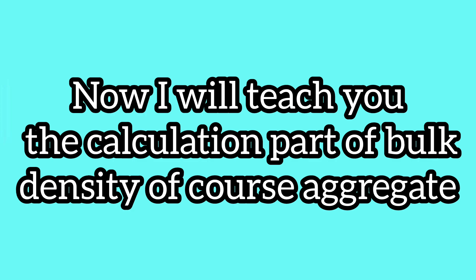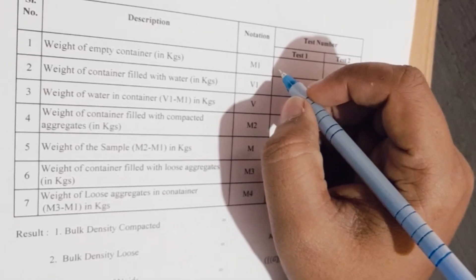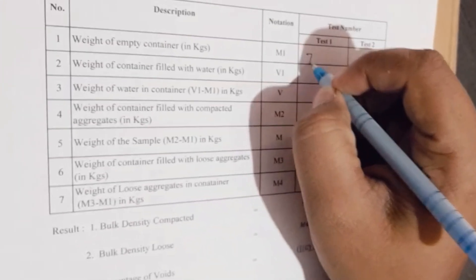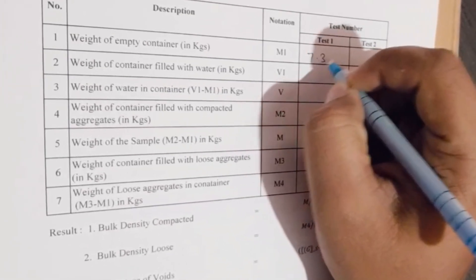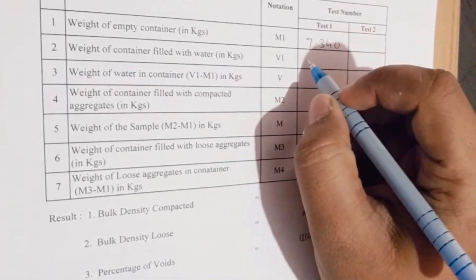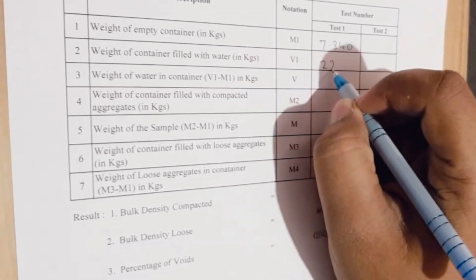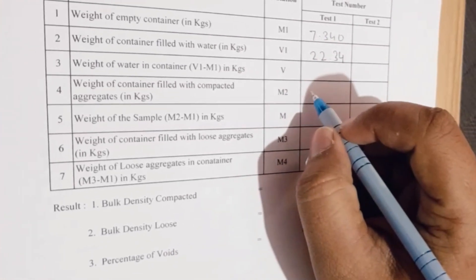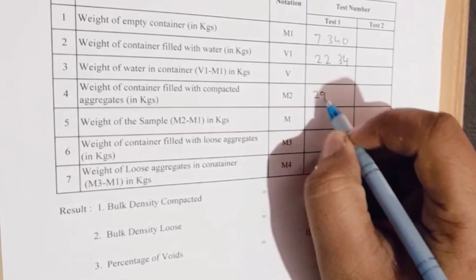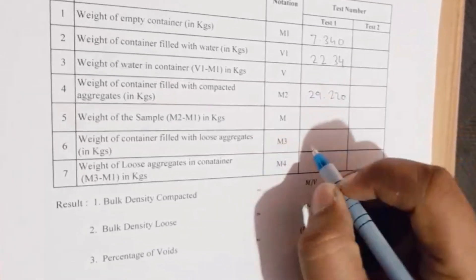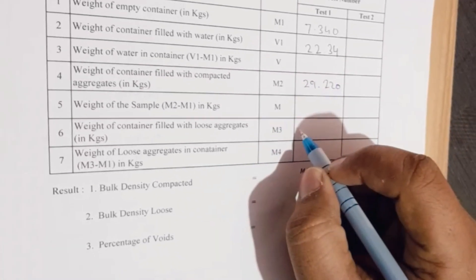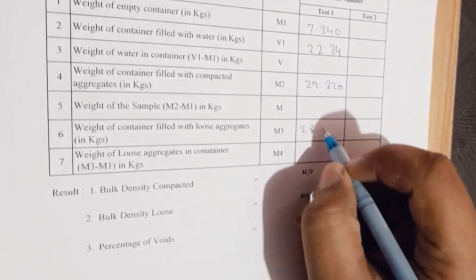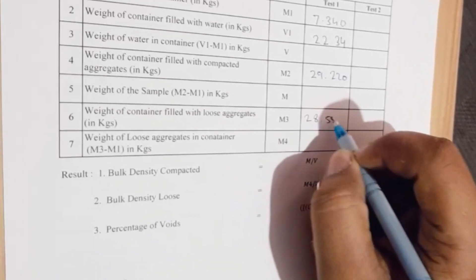Now I will teach you the calculation part of bulk density of coarse aggregate. The weight of the empty cylinder is M1. The weight of the container filled with water is V1. The weight of the container filled with compacted aggregate is M2. The weight of the container filled with loose aggregate is M3.